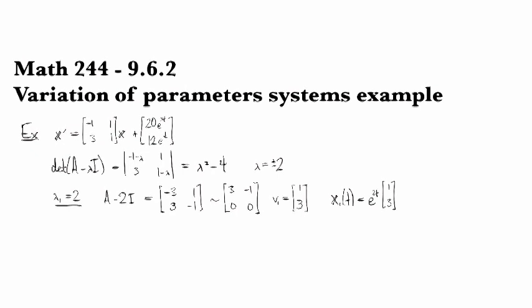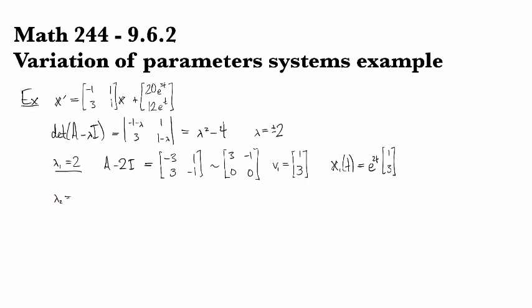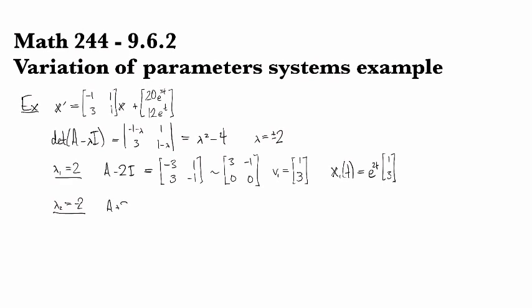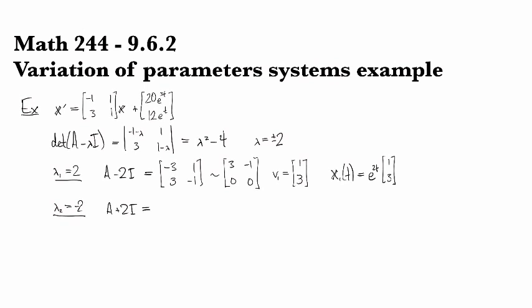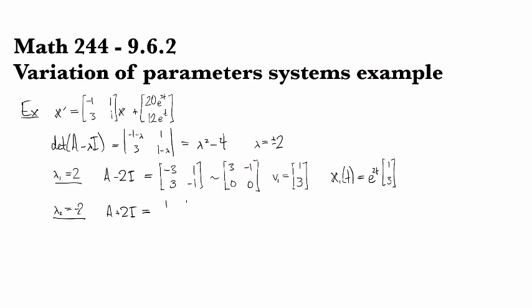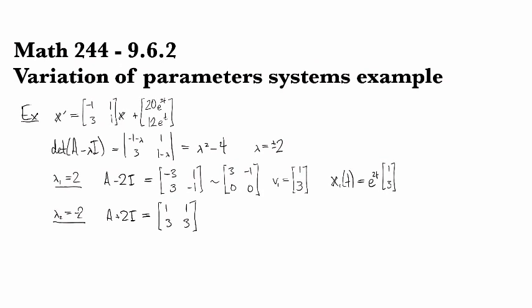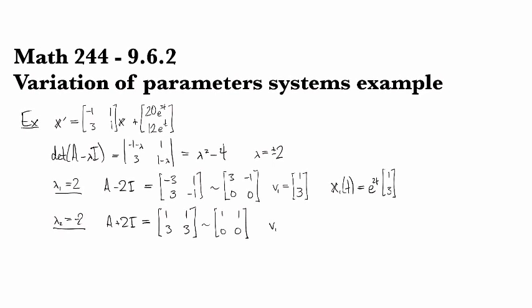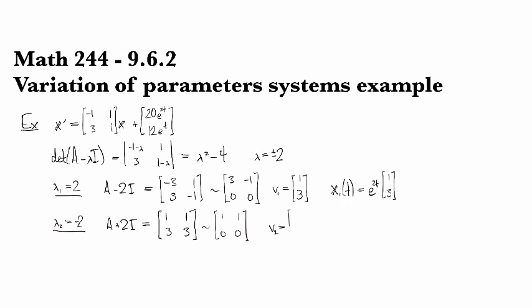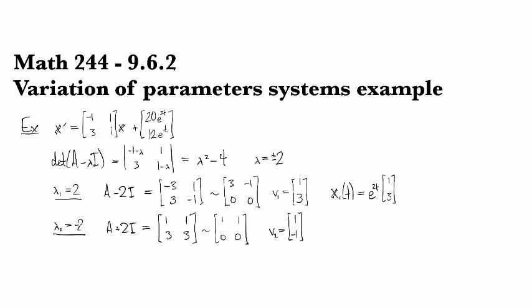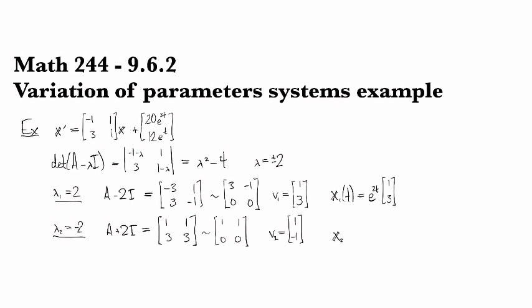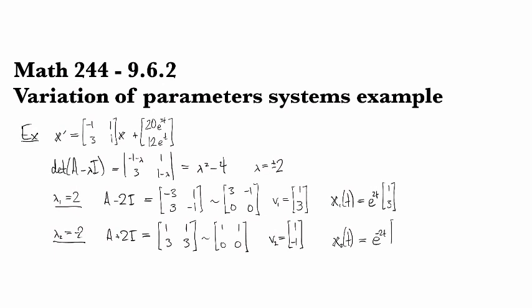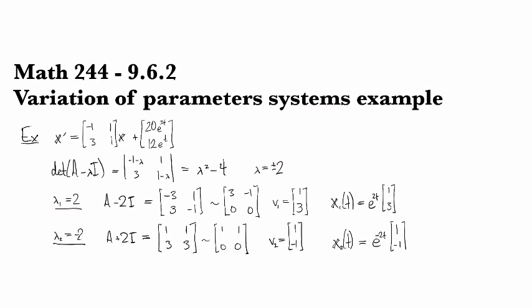For our other eigenvector, we've got minus 2 as our eigenvalue. So A plus 2I is 1, 1, 3, 3, and this row reduces immediately. We find a corresponding eigenvector of 1, minus 1, so the other part of our solution is e to the minus 2t times 1, minus 1.